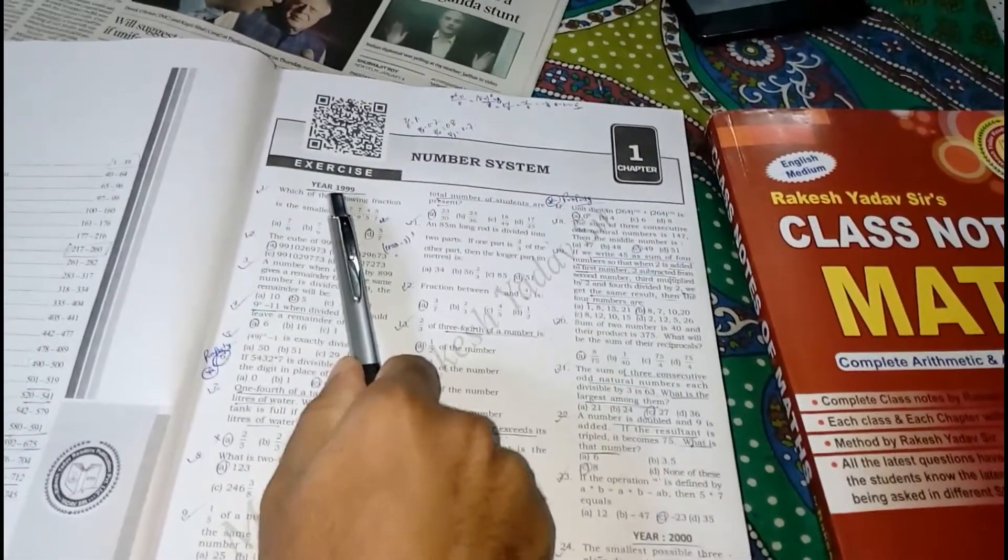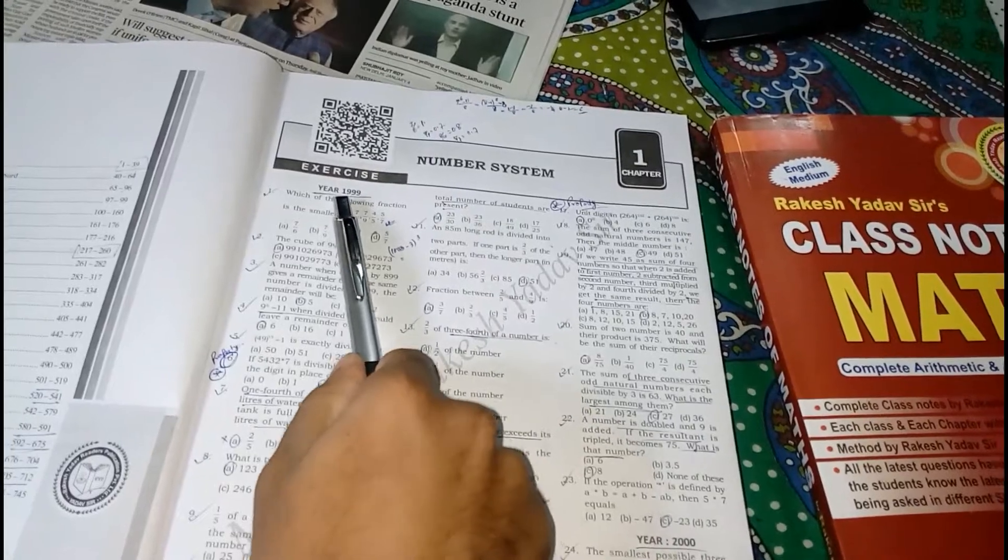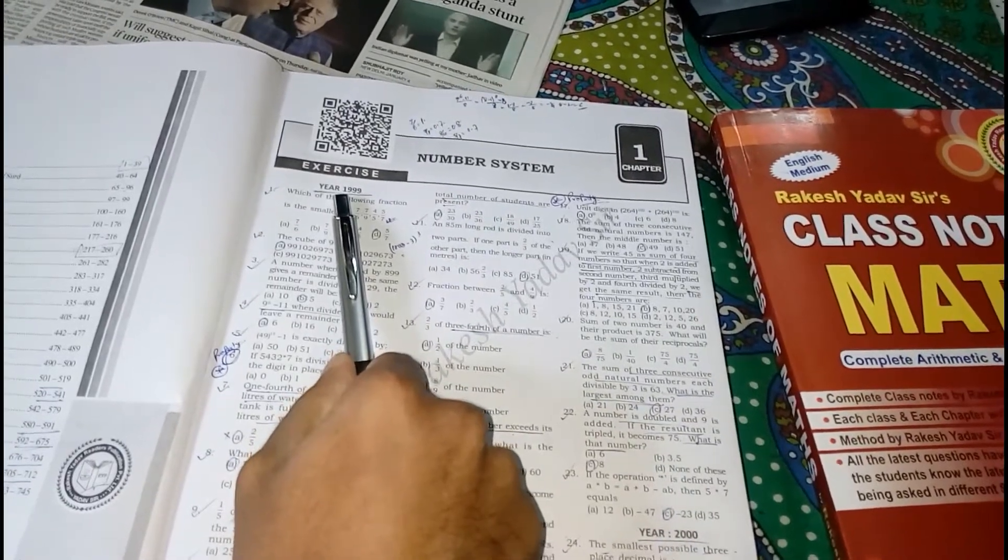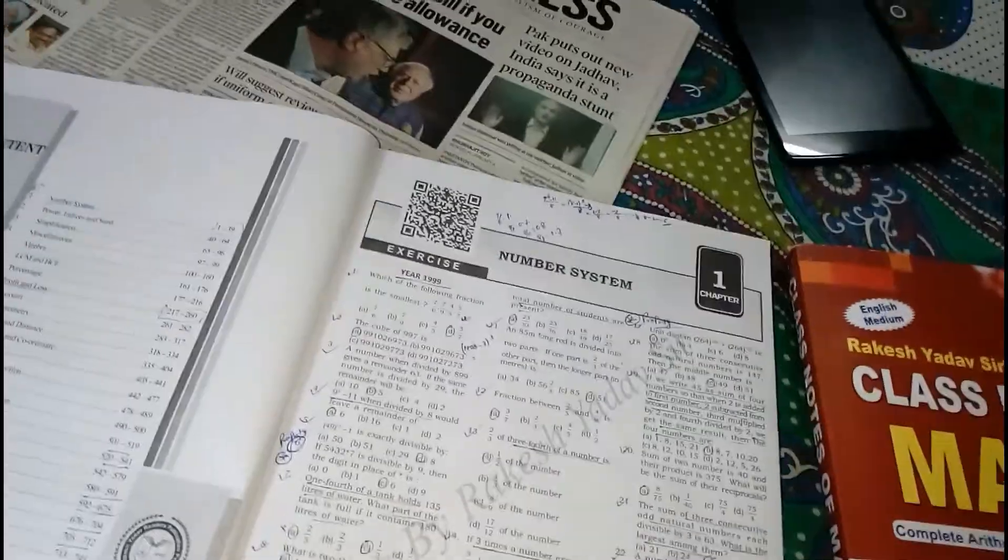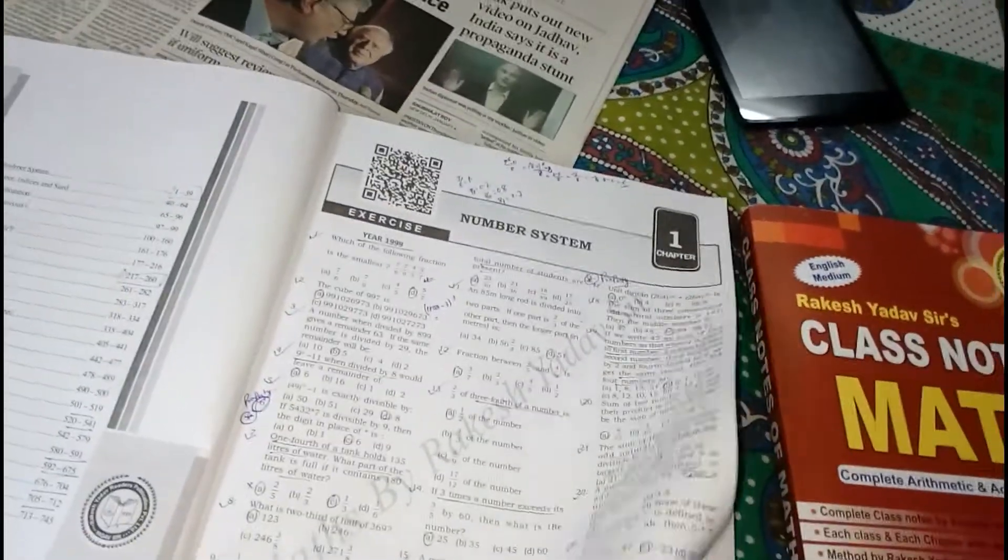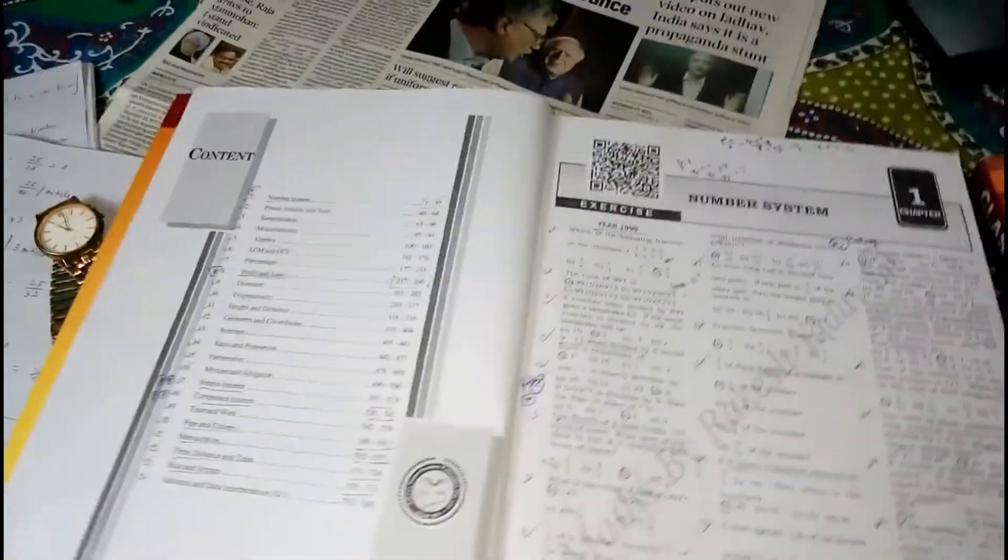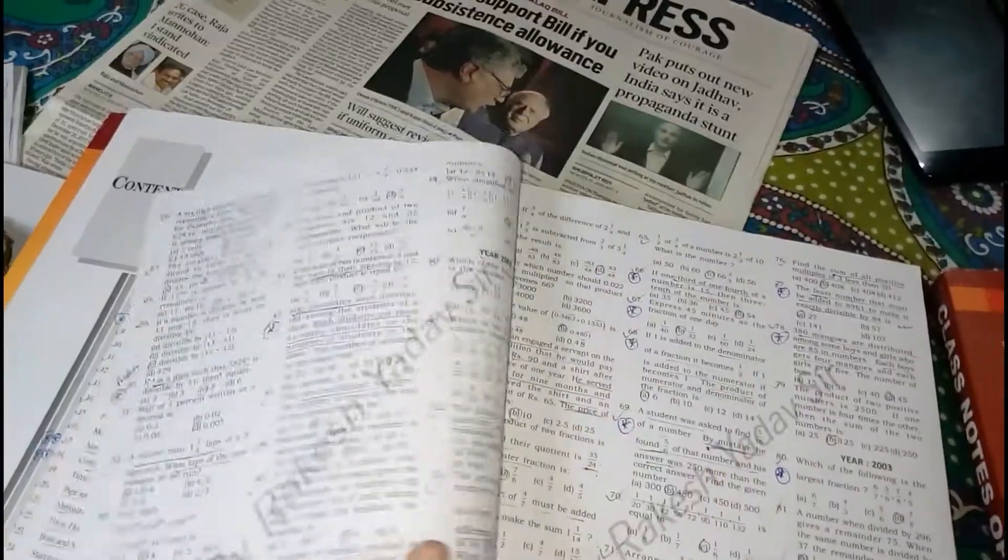Now I want to discuss about the first chapter that is the number system, as you can see here. So described all the questions that is from year starting from 1999 till 2014. All the questions has been given very nicely, you can practice here by taking a rough copy like this.